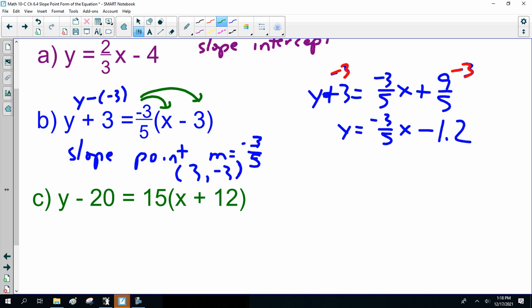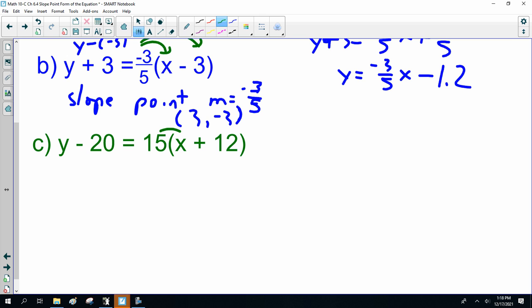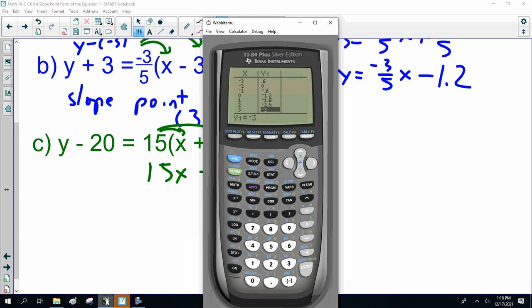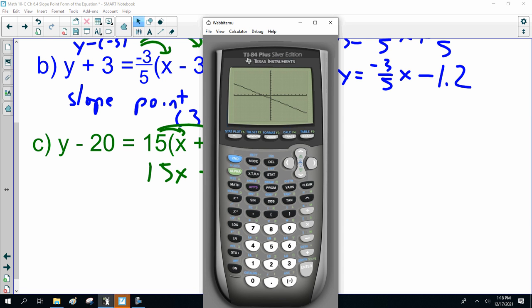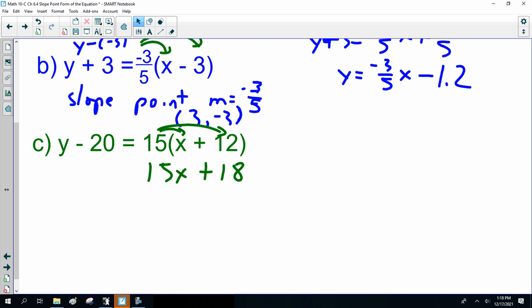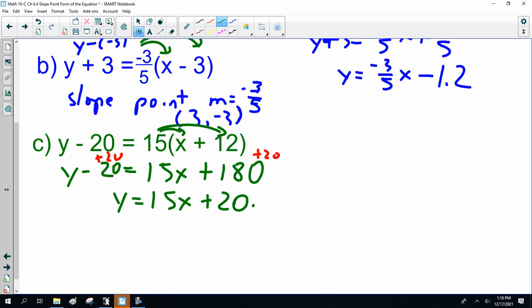Now, the last one is another slope-point form, and I'm going to multiply it out. So, 15 times x is 15x. 15 times 12 is 180. Y minus 20, plus 20 to both sides. Y equals 15x plus 200. Oh, poop.